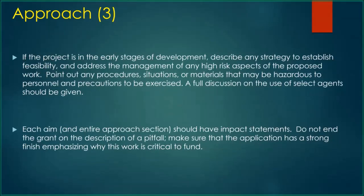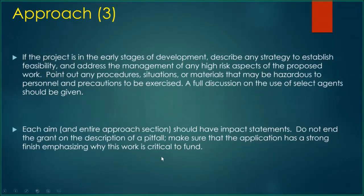If your grant is going to score in the fundable range, you have to convince three reviewers to advocate for it in front of the study section. Give them the most ammunition possible to convince everyone this grant will make a prolonged impact on the field. Have an impact statement at the end of your aims page, at the end of each individual aim, and an overall impact statement at the end of the approach section. It is not good to end a grant on a description of a pitfall — you don't want the last thing the reviewer reads to be a reason an experiment isn't going to work. Give that strong finish that emphasizes why this work is critical to be funded.